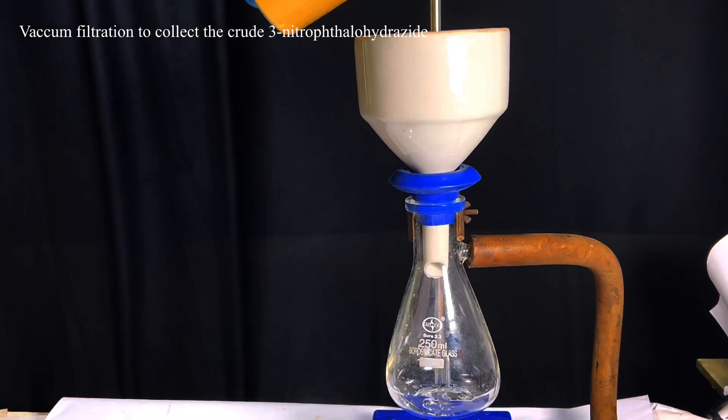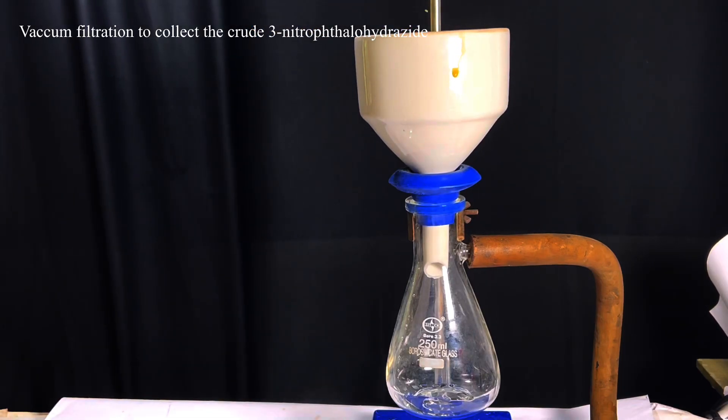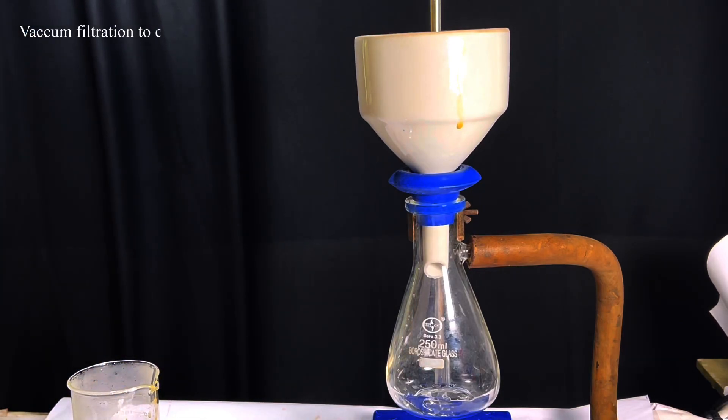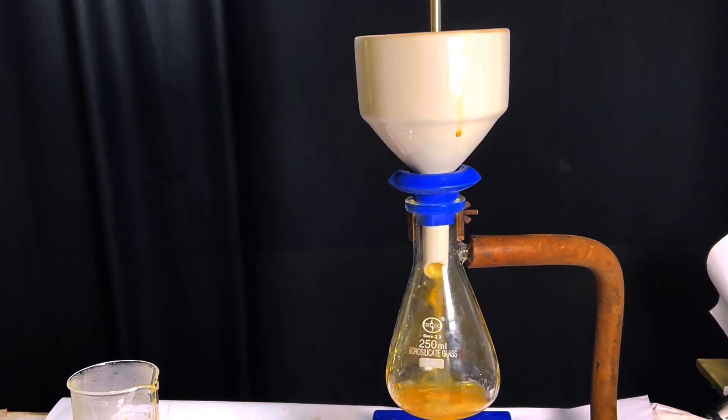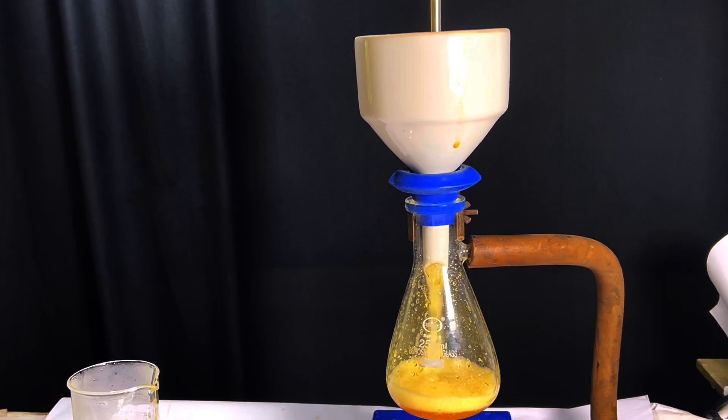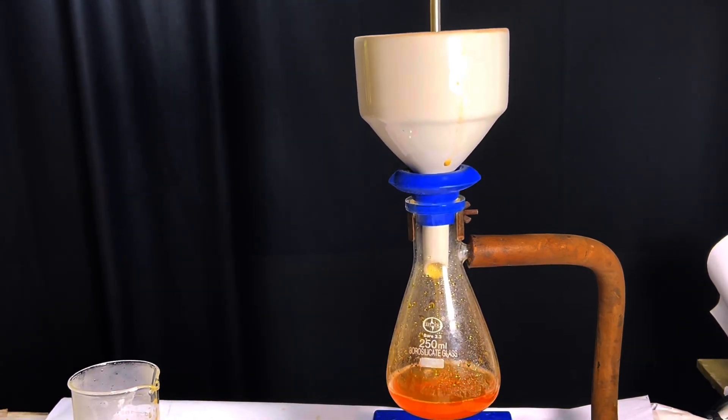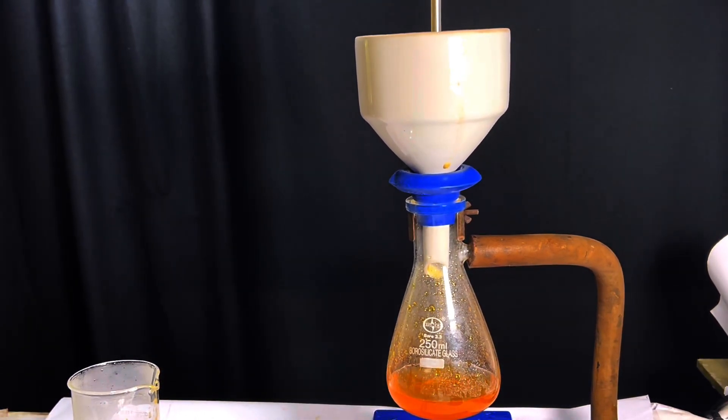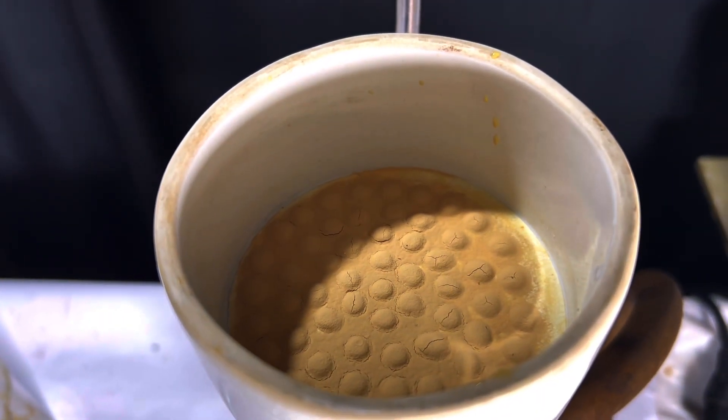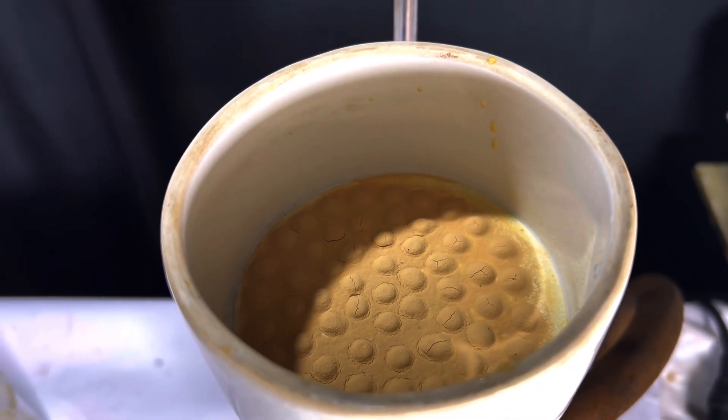Then filter the crude 3-nitrophthalhydrazide. I am using a vacuum filtration method. Be careful not to splash chemicals while transferring from one container to another. This is the crude compound 3-nitrophthalhydrazide after filtration.